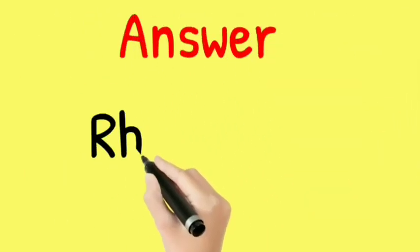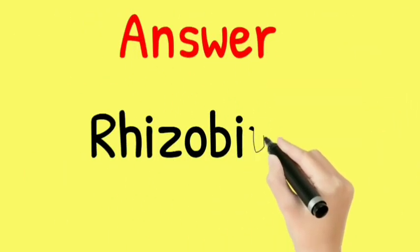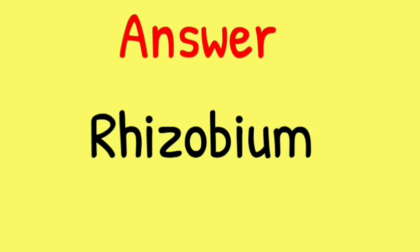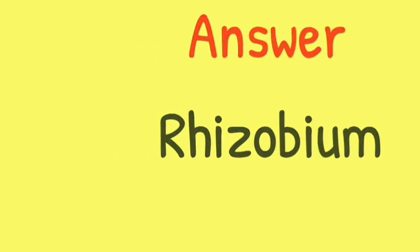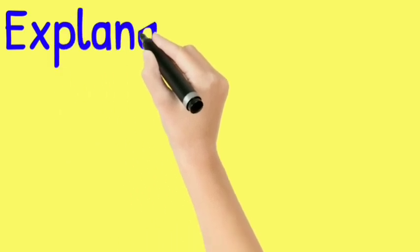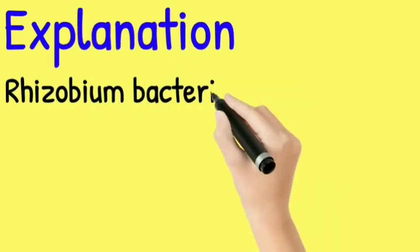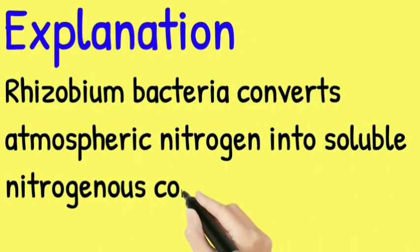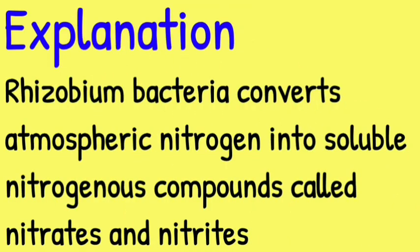The answer for this question is option number 2, which is Rhizobium. Explanation: Rhizobium bacteria converts atmospheric nitrogen into soluble nitrogenous compounds called nitrates and nitrites.